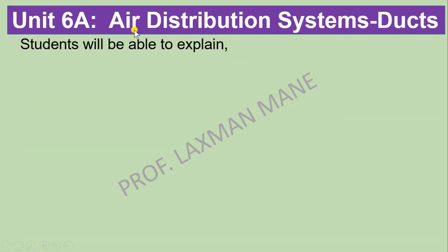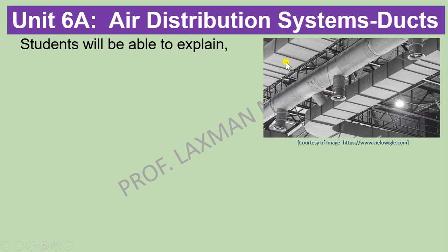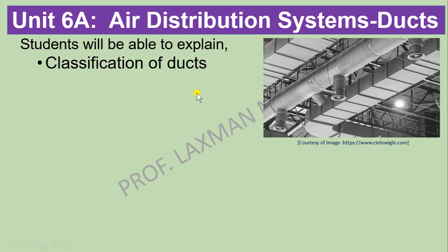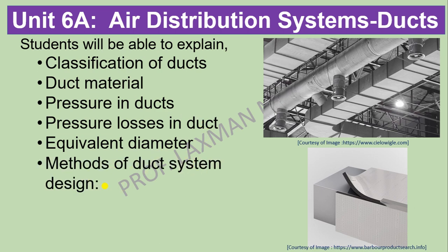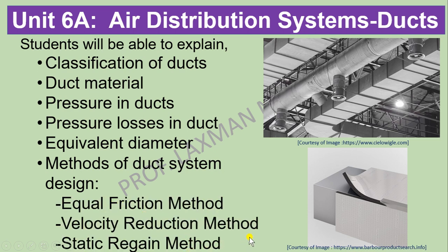Unit 6 has again two parts. Part A is Air Distribution Systems, that is, ducts. Ducts are metallic branches used to convey air from source to destination. Topics include classification of ducts, duct materials, pressure in ducts, pressure losses occurring in ducts while flowing air, equivalent diameter — a concept required to decide the shape of a duct — and methods of duct system design. There are three methods: equal friction, velocity reduction, and static regain method.